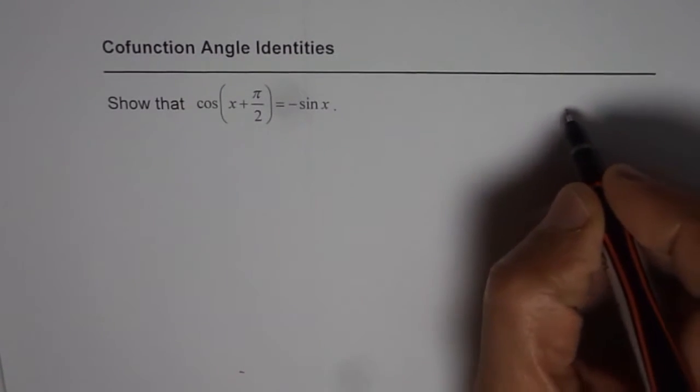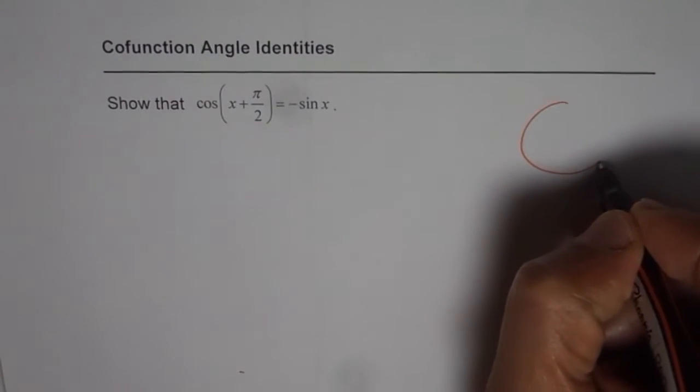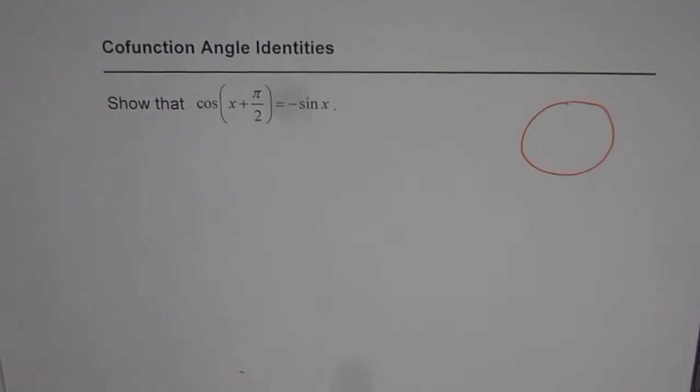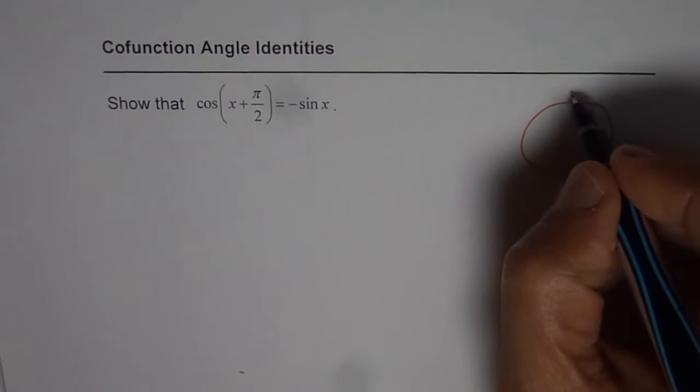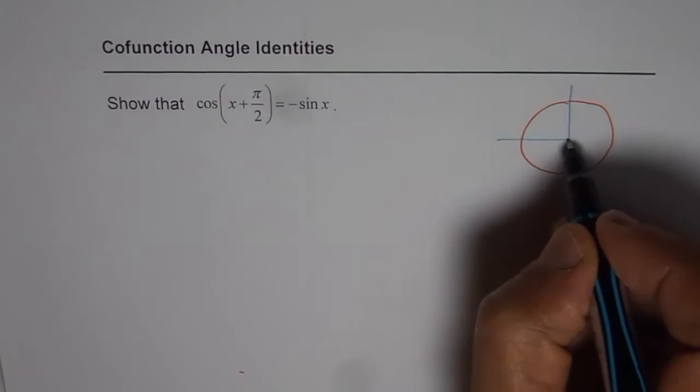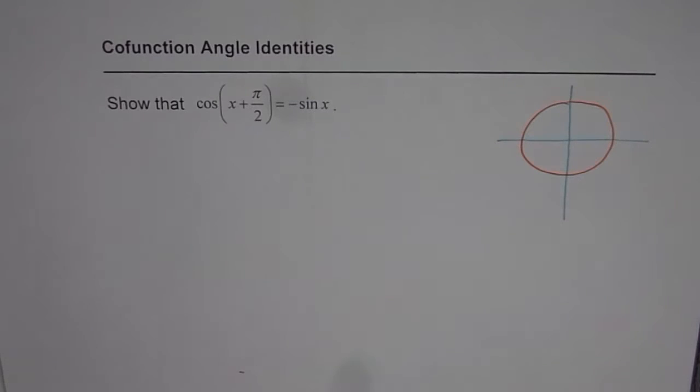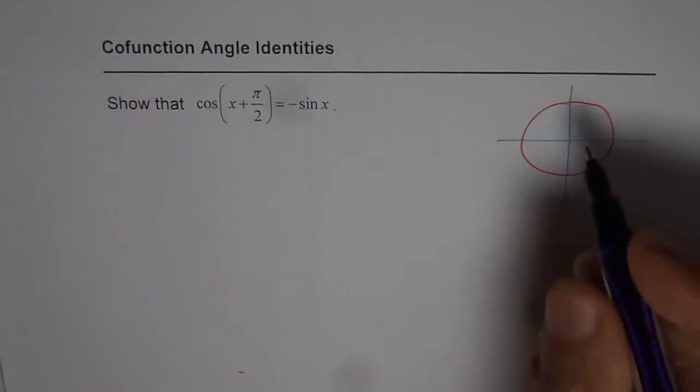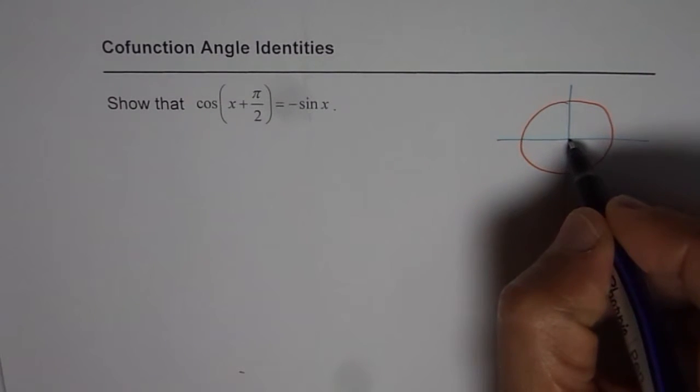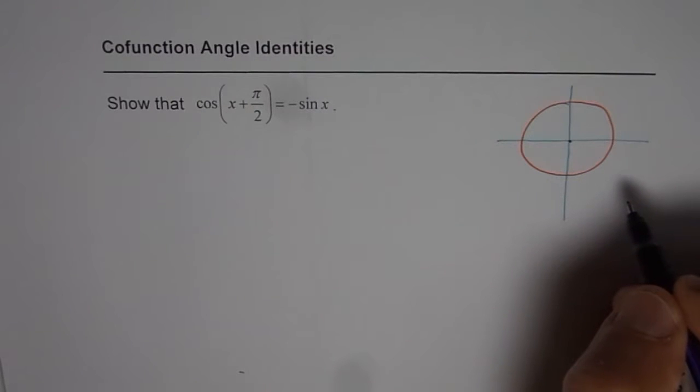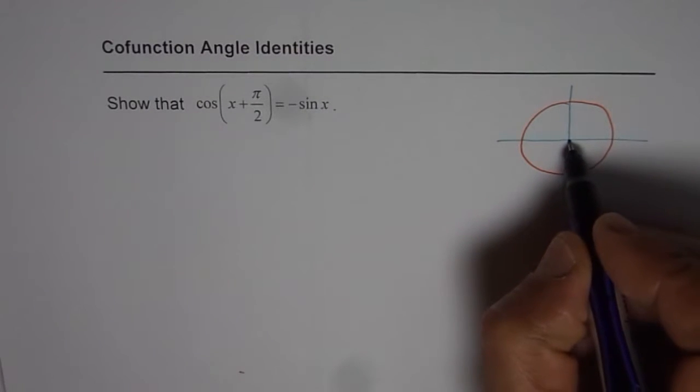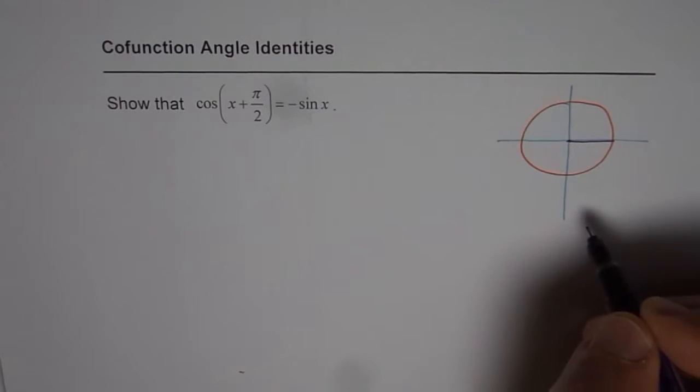Let us consider a unit circle. So that is my unit circle. Let me now draw x and y axis here. And we are considering angles in standard position. That is to say that for the angle, vertex is at the origin and initial arm is along the x axis.